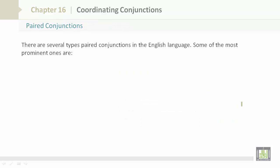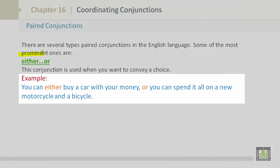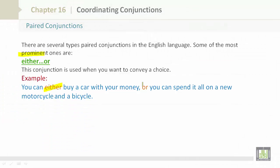Paired conjunctions. There are several types of paired conjunctions in the English language. Some of the most prominent ones are either or. This conjunction is used when you want to convey a choice. Example: You can either buy a car with your money or you can spend it all on a new motorcycle and bicycle. Please notice either and or. They are used when you want to convey a choice. You have a choice between a car or a motorcycle and a bicycle.